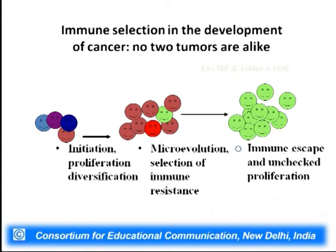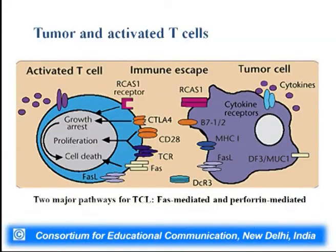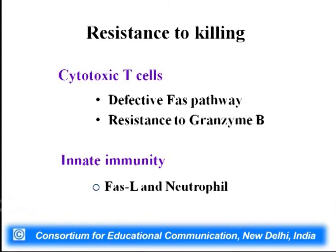Mechanisms of tumor tolerance include resistance to killing, down-regulation of MHC class 1 molecules, and other mechanisms. A tumor-activated T cell may lead to immune escape via two major pathways: FAS-mediated, causing apoptosis, or perforin-mediated. If there is resistance to killing, cytotoxic T cells or innate immunity cells are acting. The mechanism of cancer immune escape and immune surveillance will be discussed in Part 2.